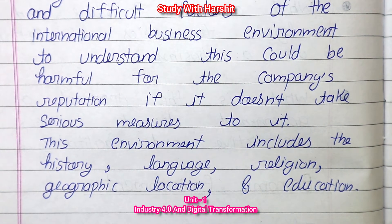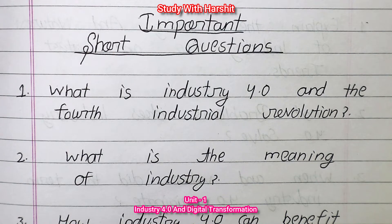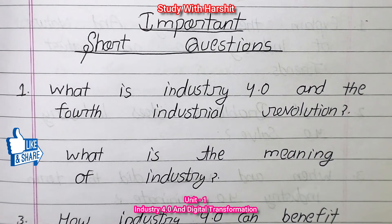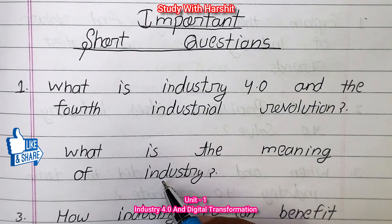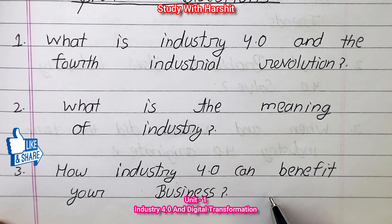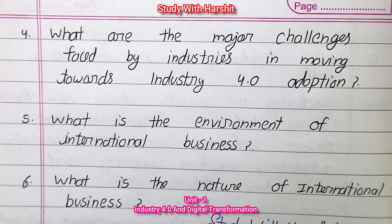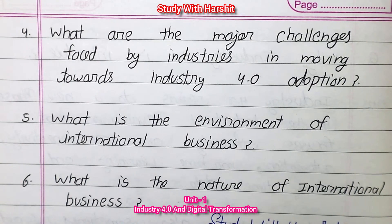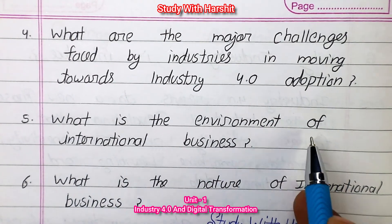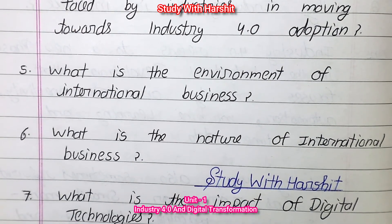Important Short Questions for Unit 1: 1) What is Industry 4.0 and the Fourth Industrial Revolution? 2) What is the meaning of industry? 3) How can Industry 4.0 benefit your business? 4) What are the major challenges faced by industries in moving toward Industry 4.0 adoption? 5) What is the environment of international business? 6) What is the nature of international business?